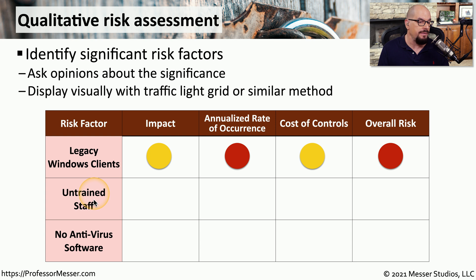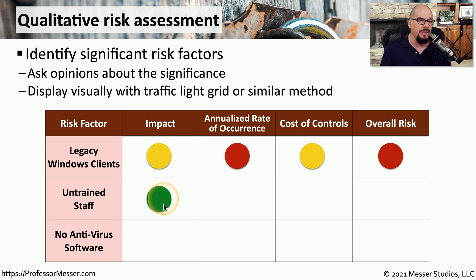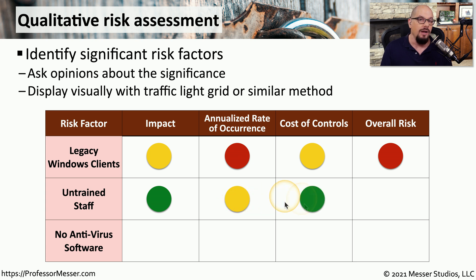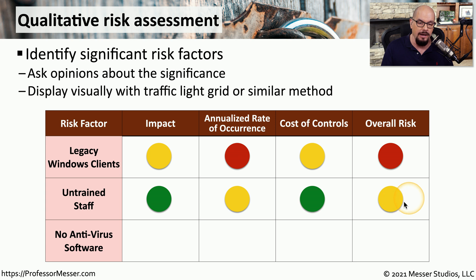Let's also consider the risk of having untrained staff. We may believe the risk is very minimal in our case, so the impact we'll mark with green. This is something that shouldn't occur very often during the year, so we'll mark it as yellow. And the cost of not training people is obviously not significant, so we'll mark that as green — meaning the overall risk for untrained staff in our environment we'll mark as yellow.